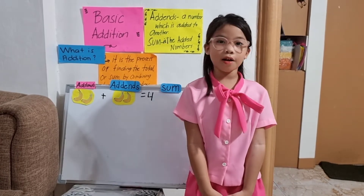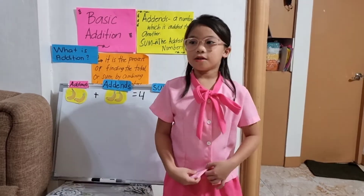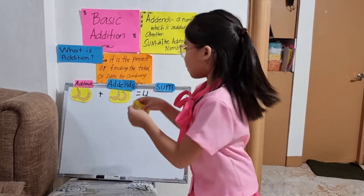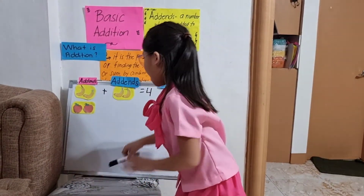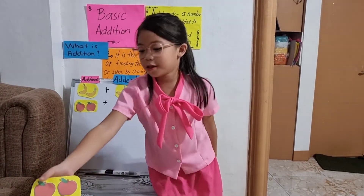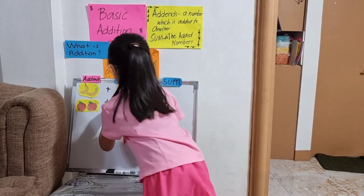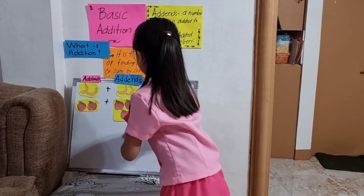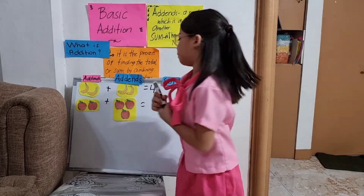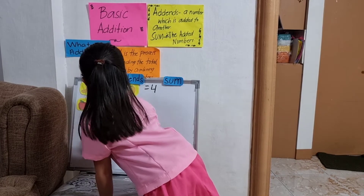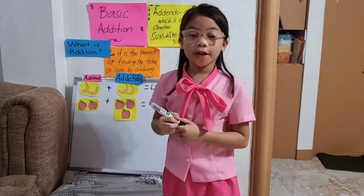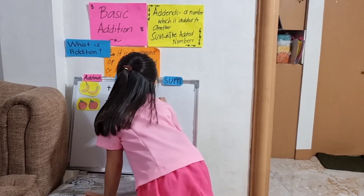So I have here another example. I have here two apples plus three apples. Let's count: one, two, three, four, five. So we have five apples.